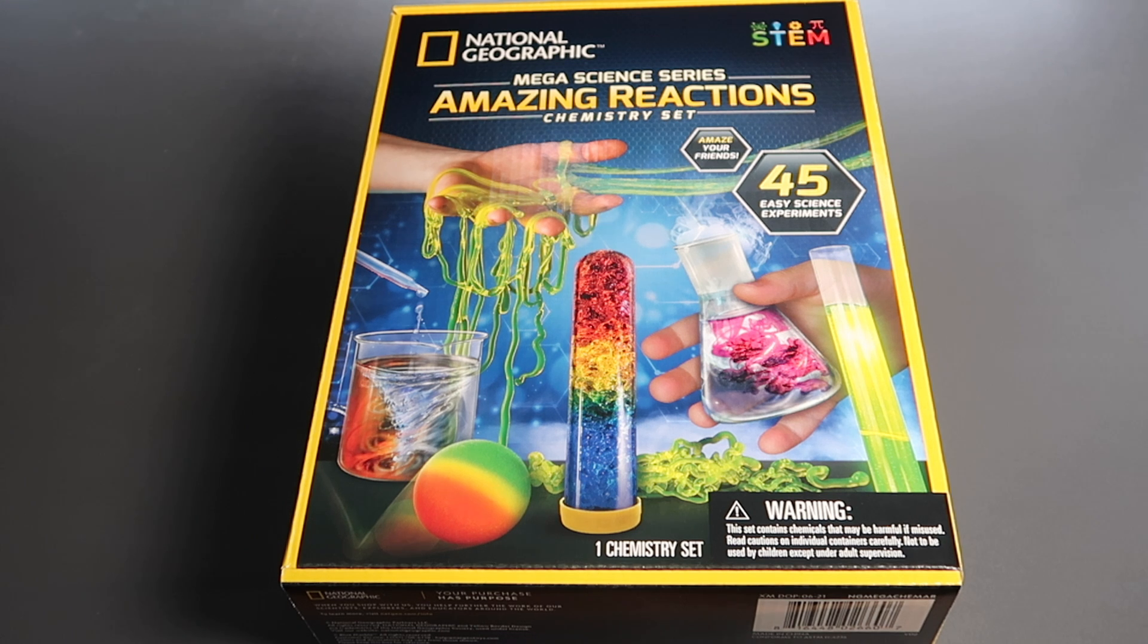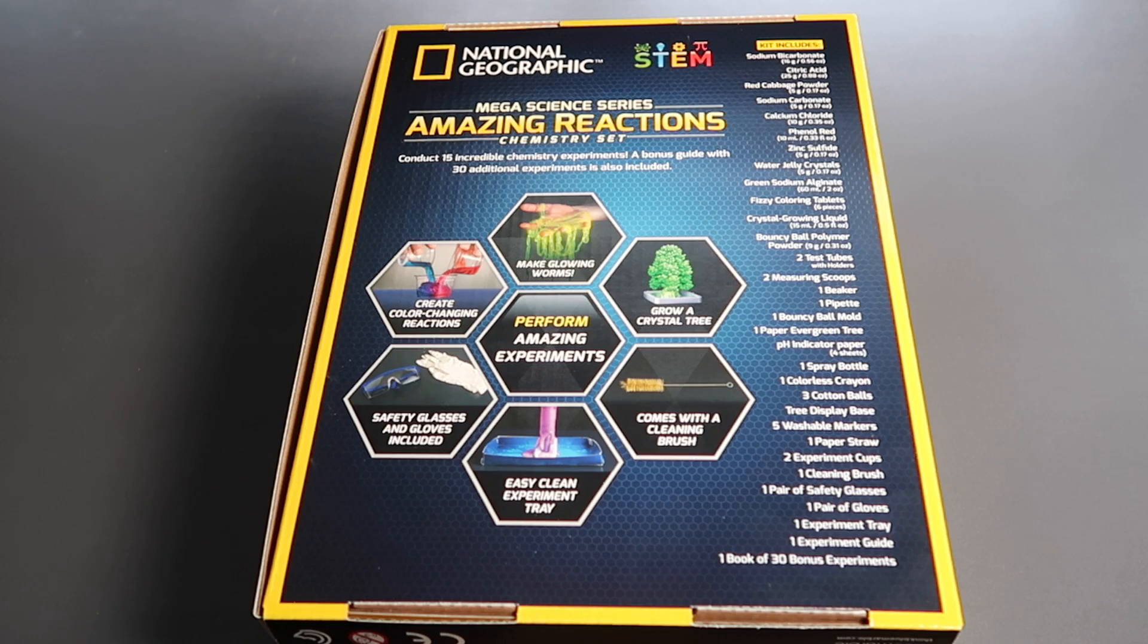Hello science lovers. Today we're looking at the National Geographic Amazing Reactions Chemistry Set, which is part of the Mega Science Series. It's billed as having 45 easy science experiments. I'll include a list of all the experiments in the description below the video.